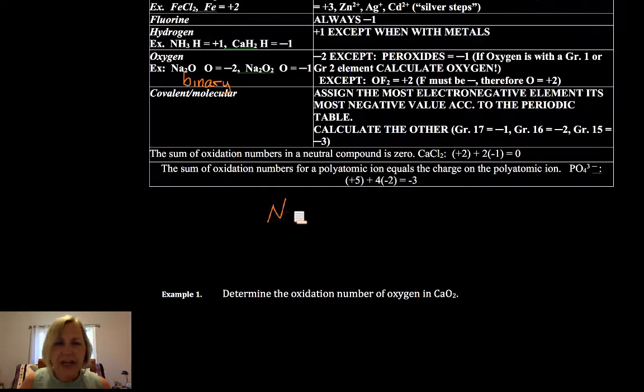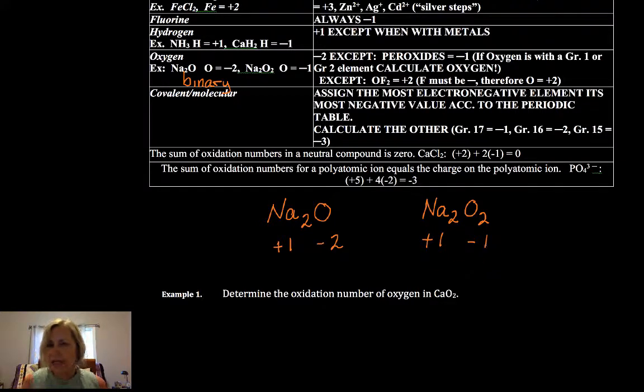And what we have there is instead of seeing Na2O, in which the sodium's plus 1 and the oxygen's minus 2, we see Na2O2. And those are our peroxides. Sodium, those are each plus 1, which means that the oxygen's each minus 1. Another example you should be familiar with is water. Hydrogen's plus 1, oxygen's minus 2.